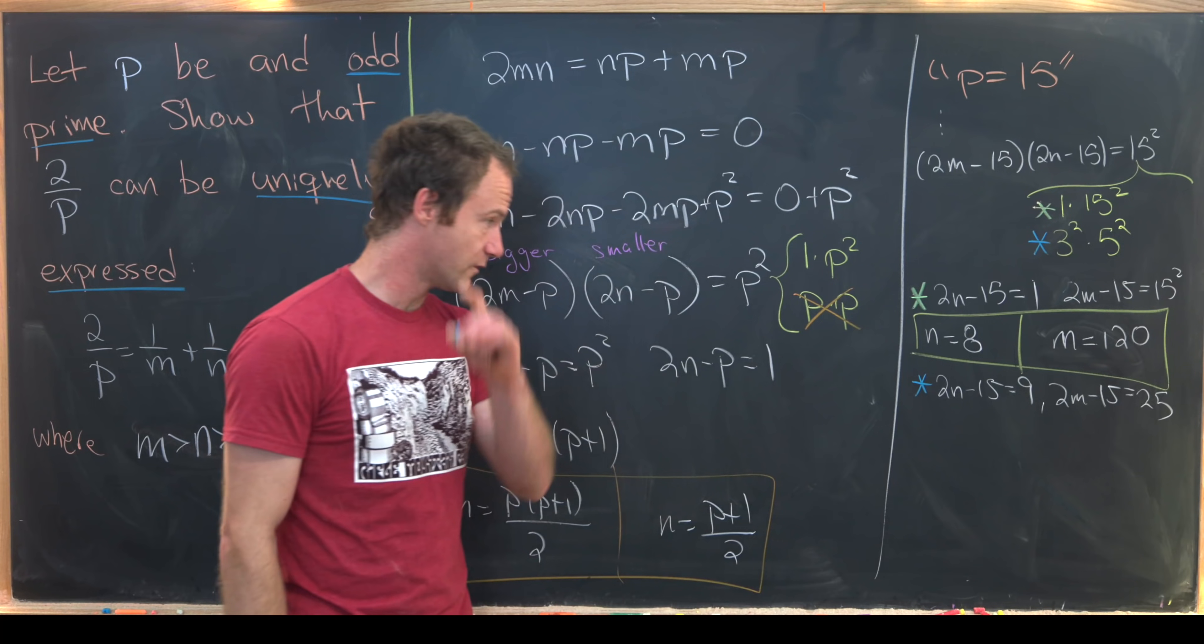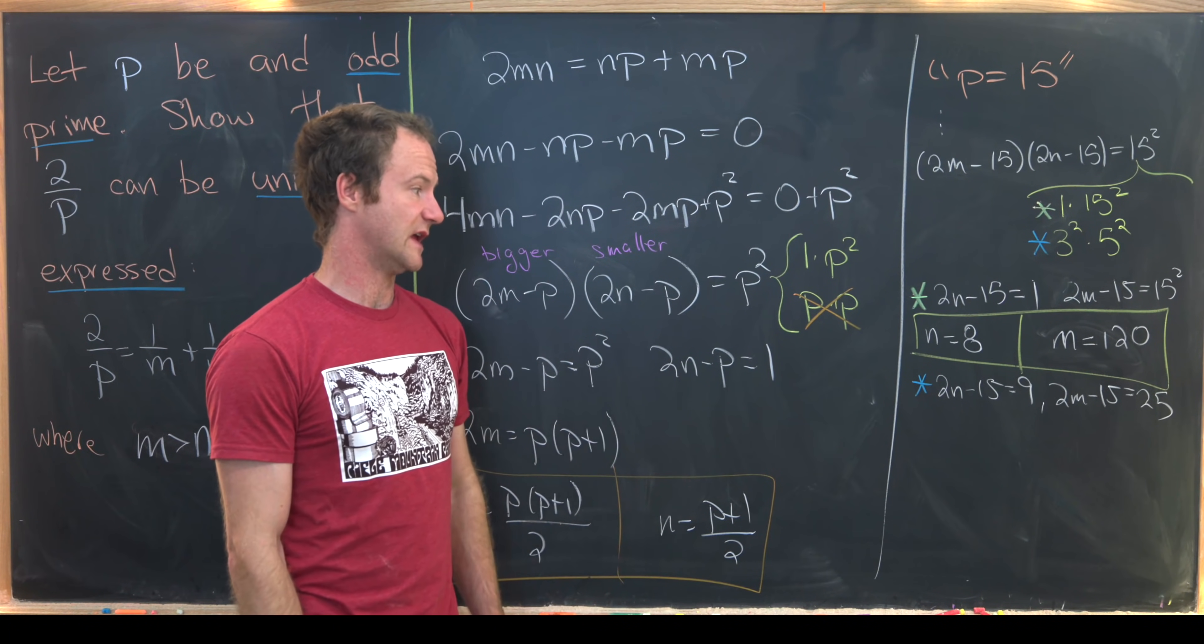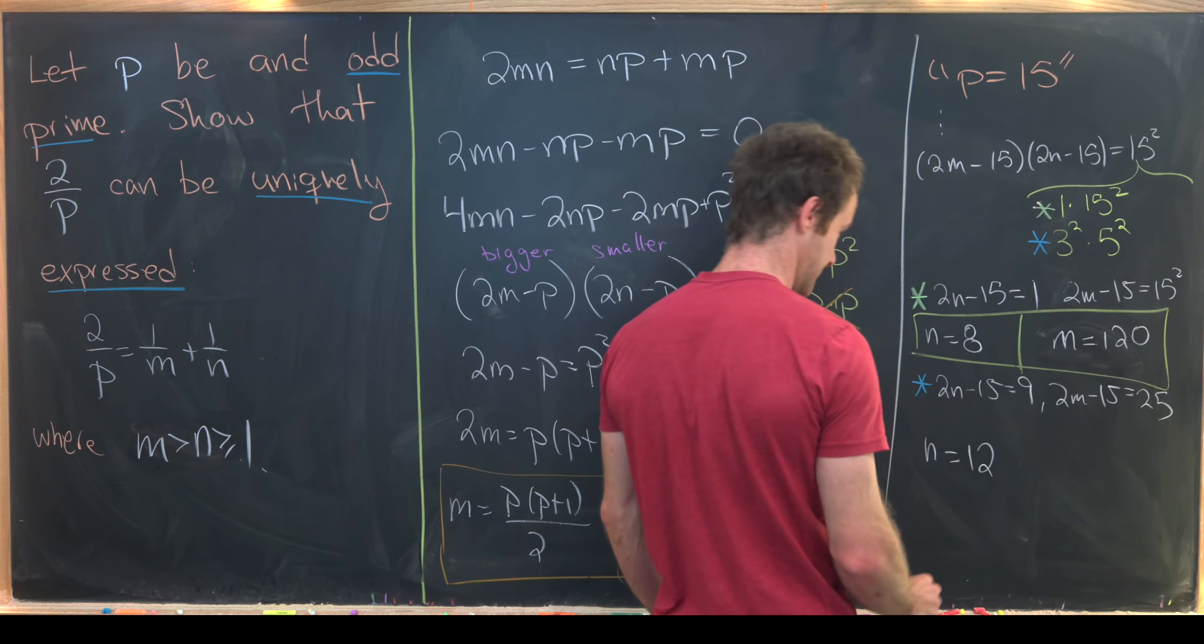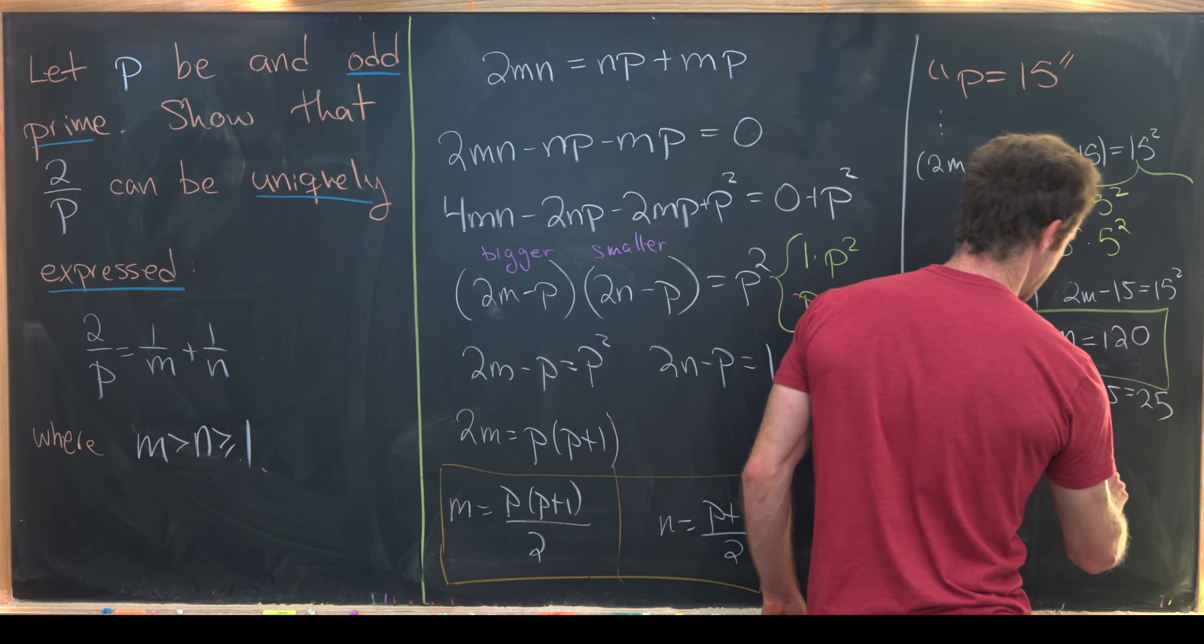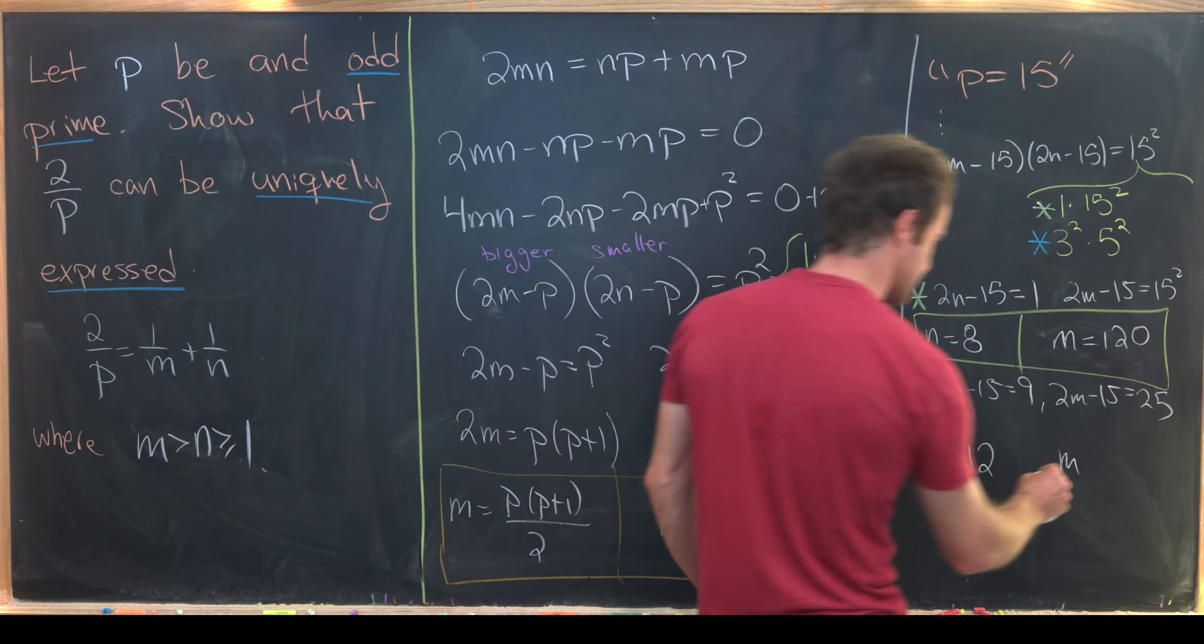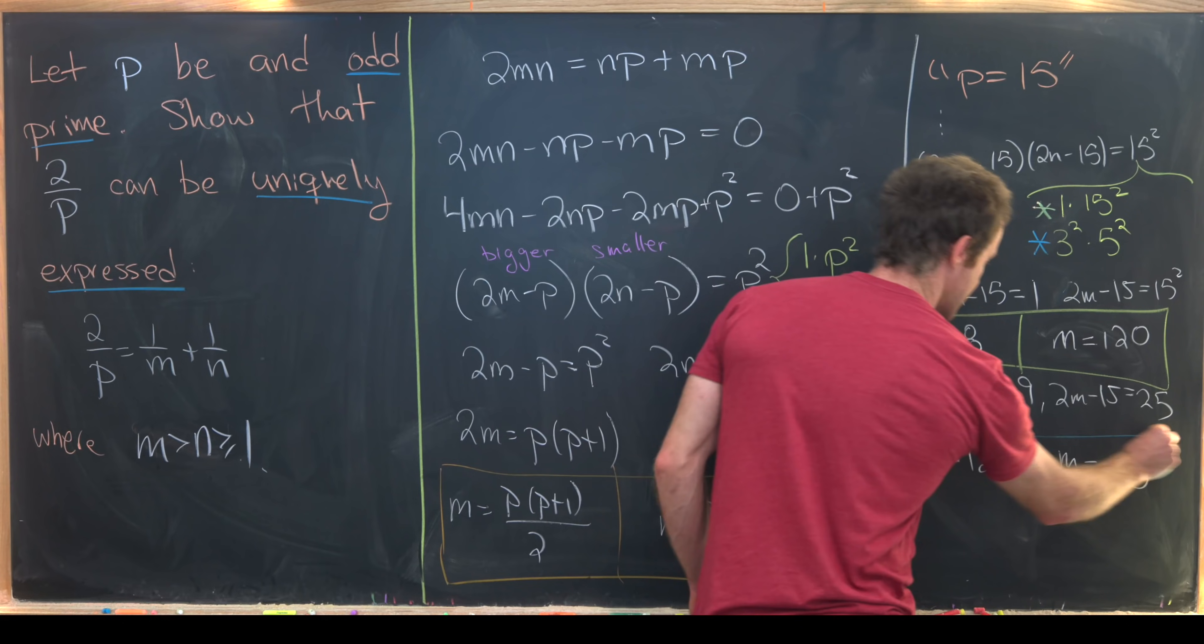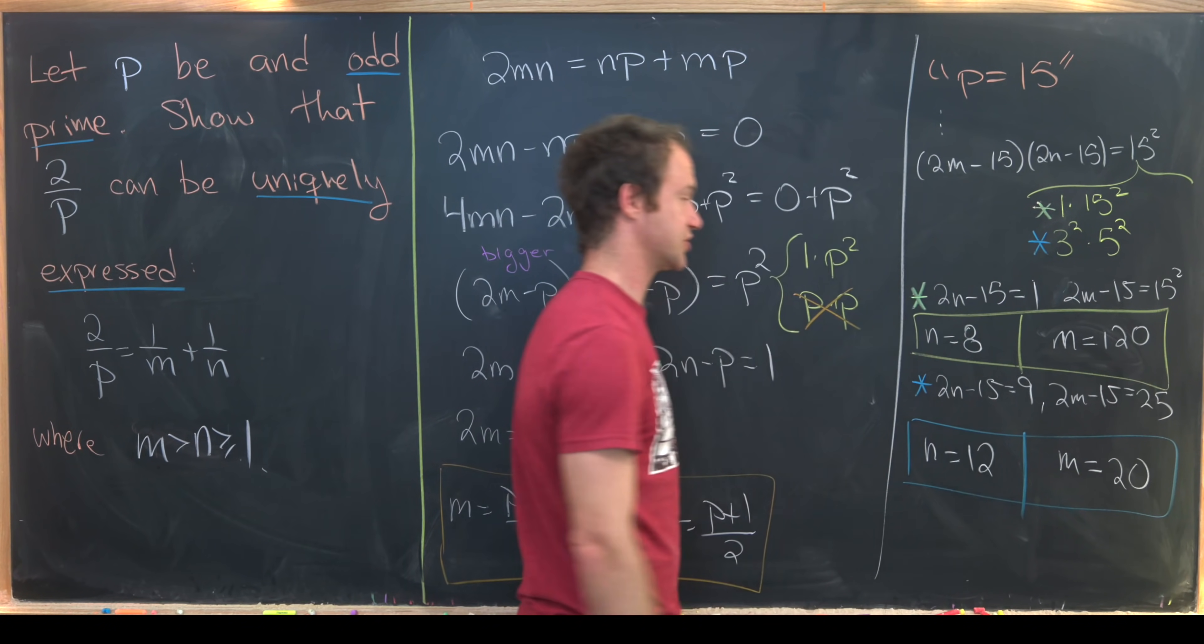Notice we can move the 15 over. We'll get 2N is equal to 24 or N is equal to 12. And then here we'll get 2M is equal to 40 so M is equal to 20. And those two solutions also work.